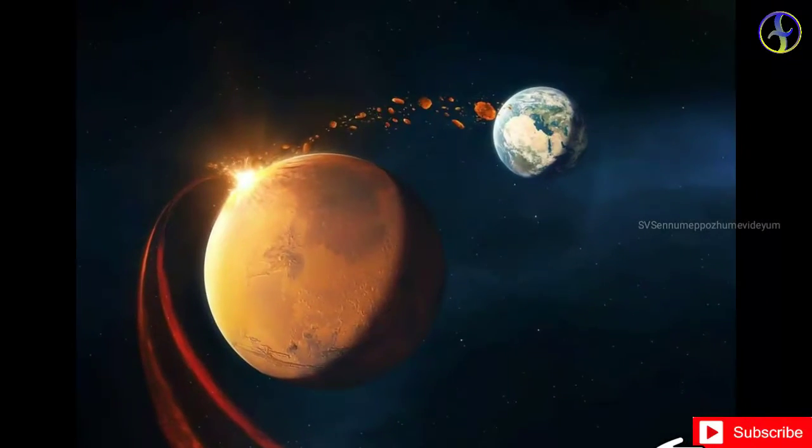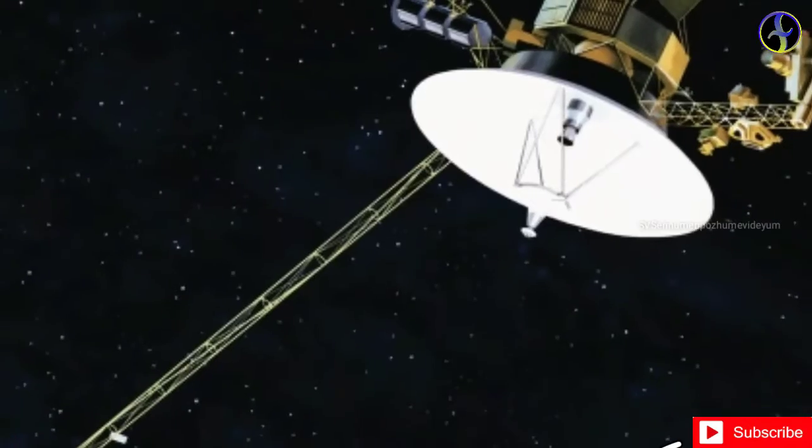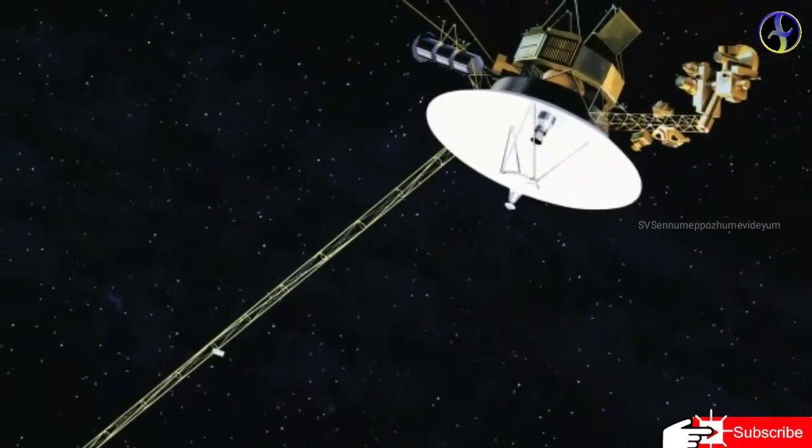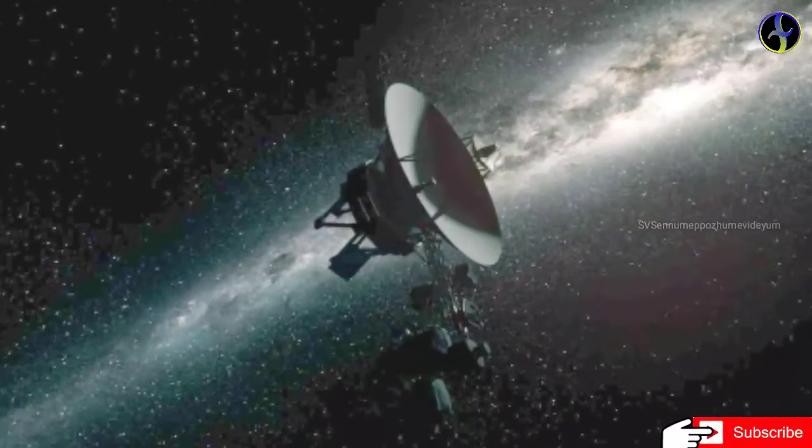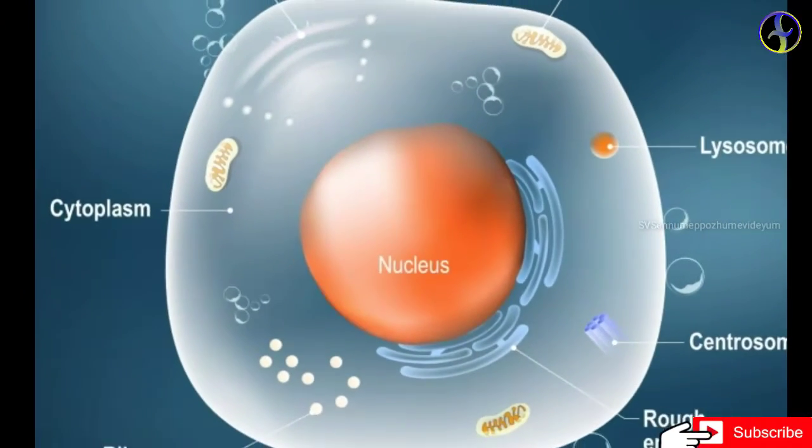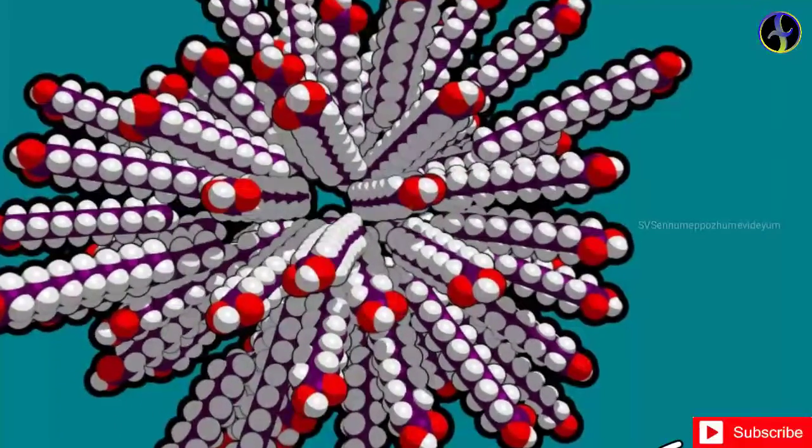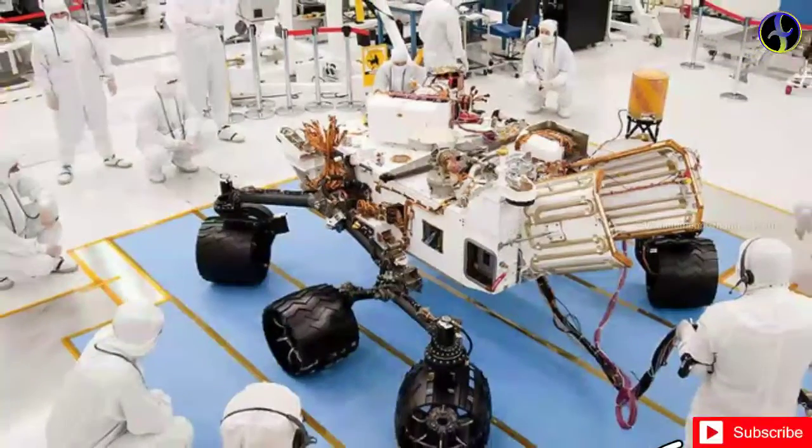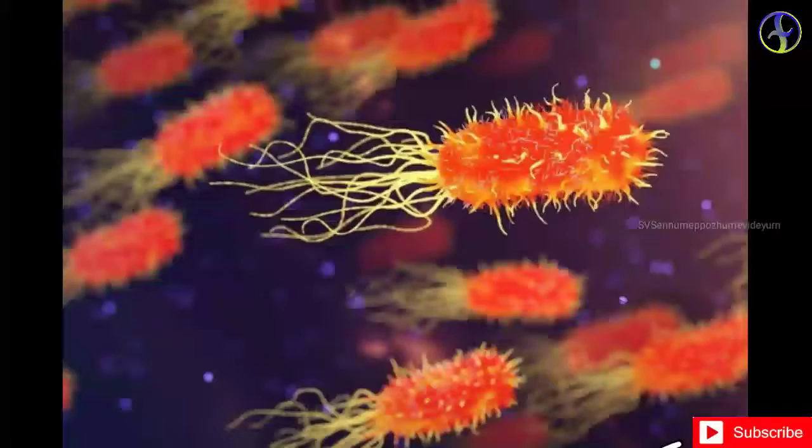To summarize: accidental panspermia, directed panspermia, lithopanspermia, protopanspermia, pseudo-panspermia, and radiopanspermia. These theories explain different ways that life could have originated or been transported across the universe.